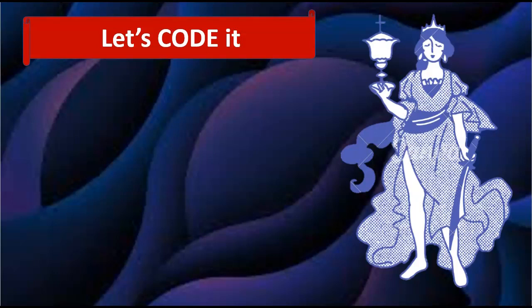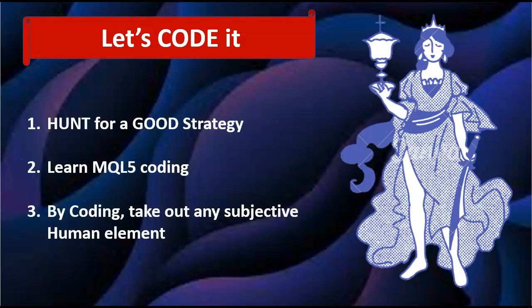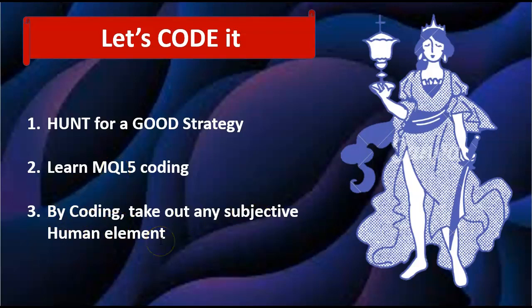I'm starting a new series where we're going to hunt for good profitable strategies on the internet and on YouTube, come back and code them into MQL. I'll share the coding process so you can see how the code works and maybe learn from it. Through coding we basically take out any subjective human element from the entire execution of the strategy, so when we run it we know we are following the rules 100%. The idea is we'll code as many strategies as we can find on YouTube, and hopefully some of them will turn out to be profitable.